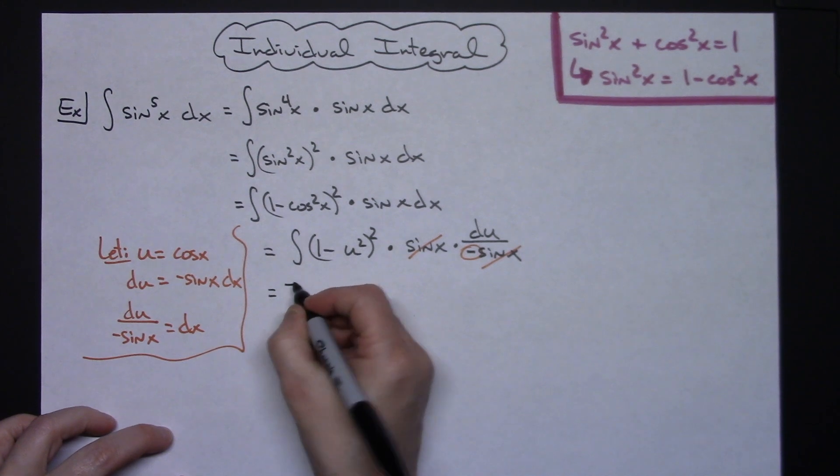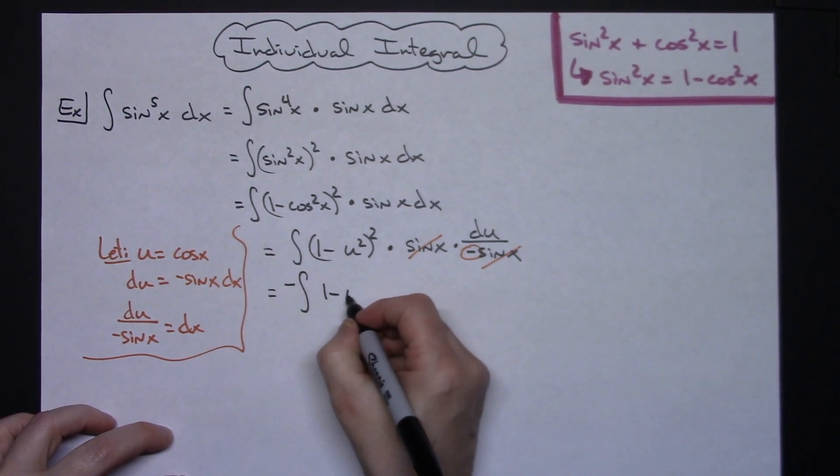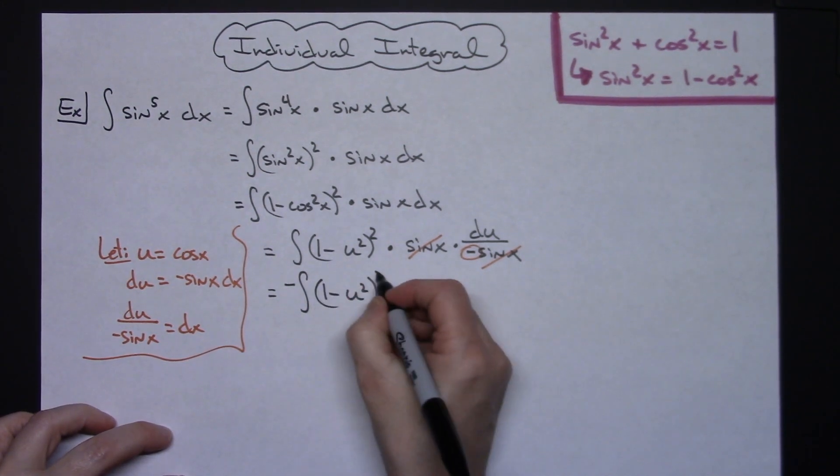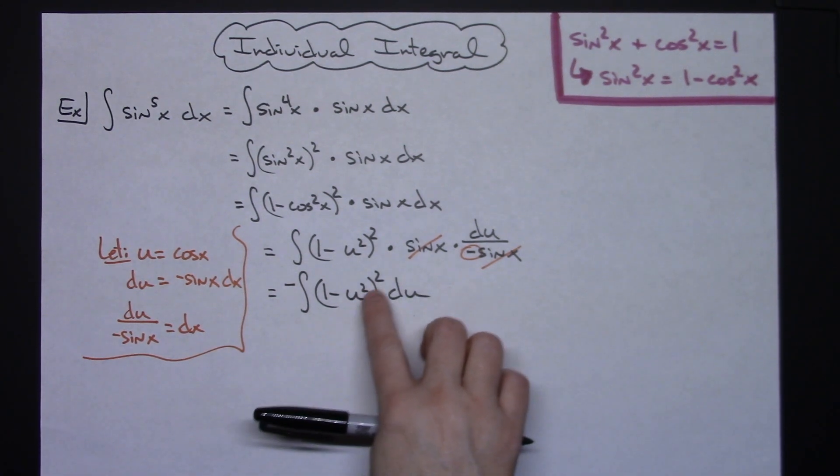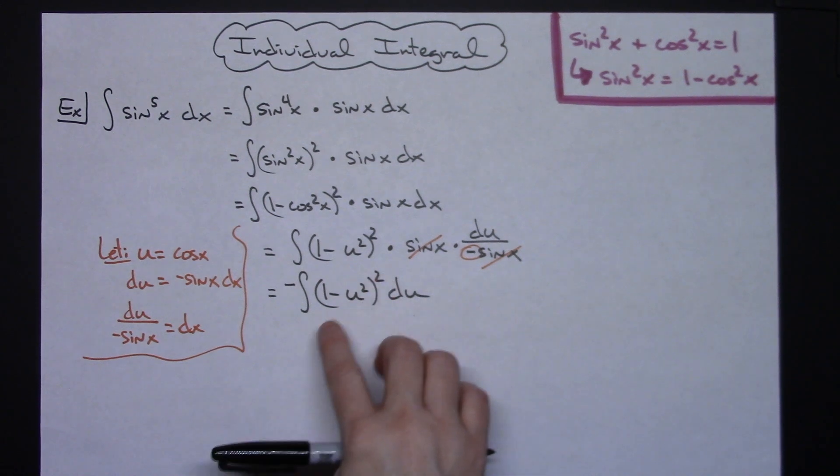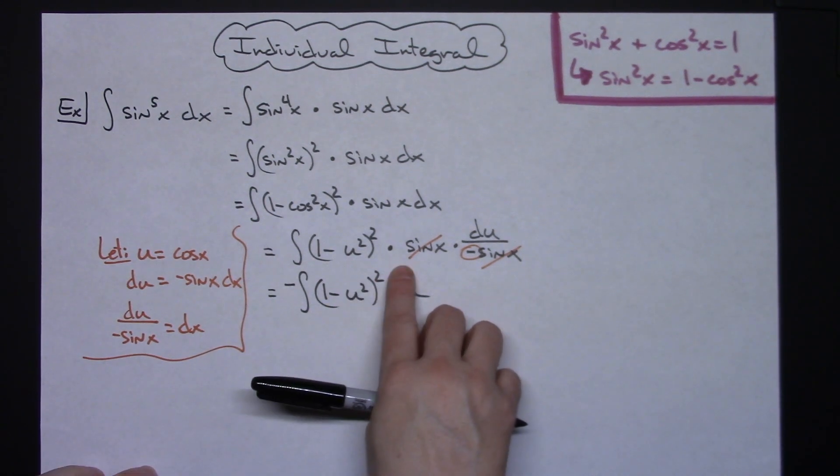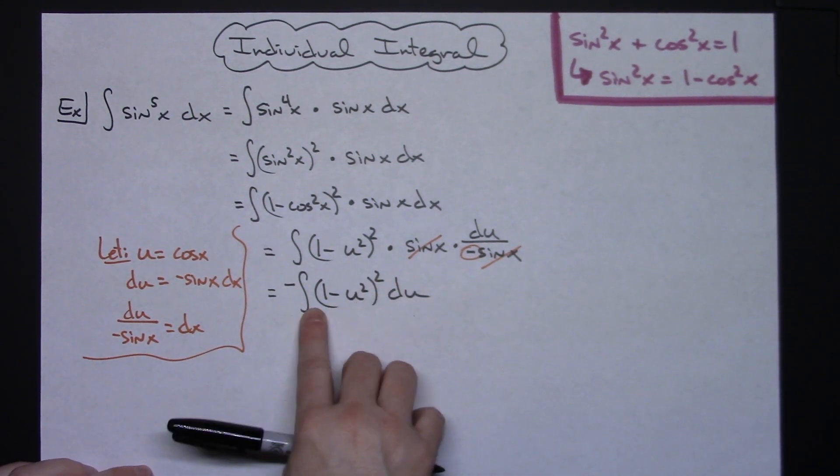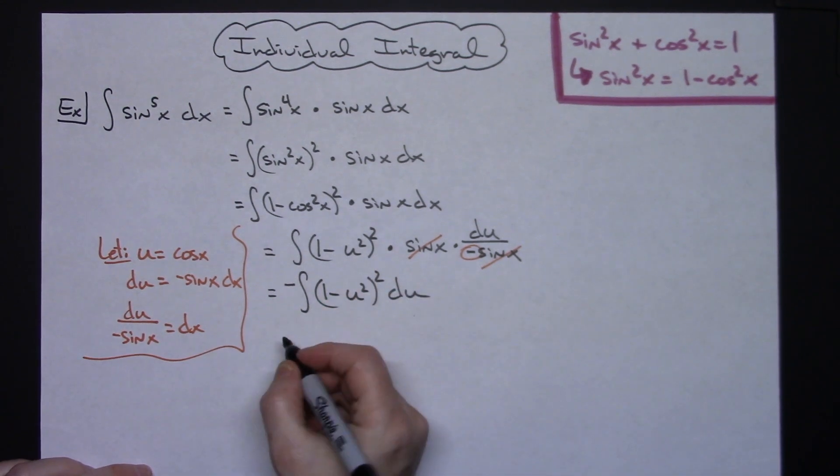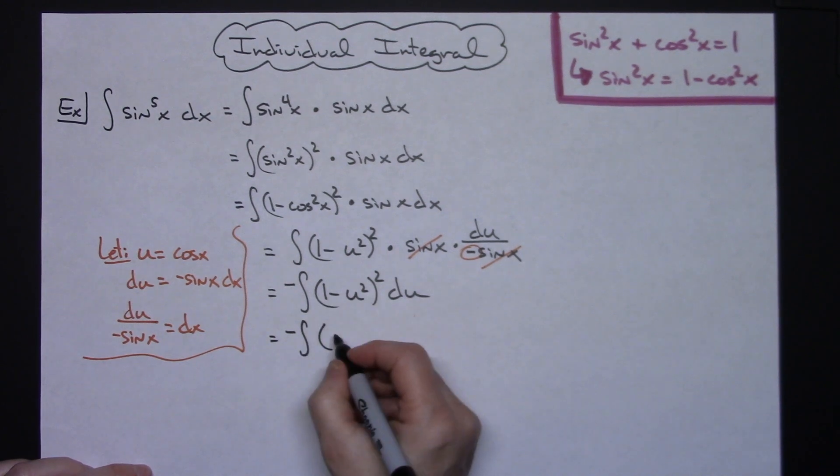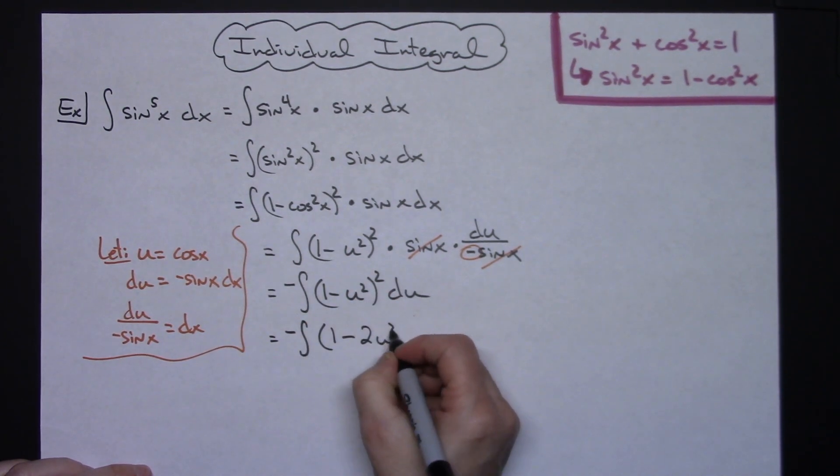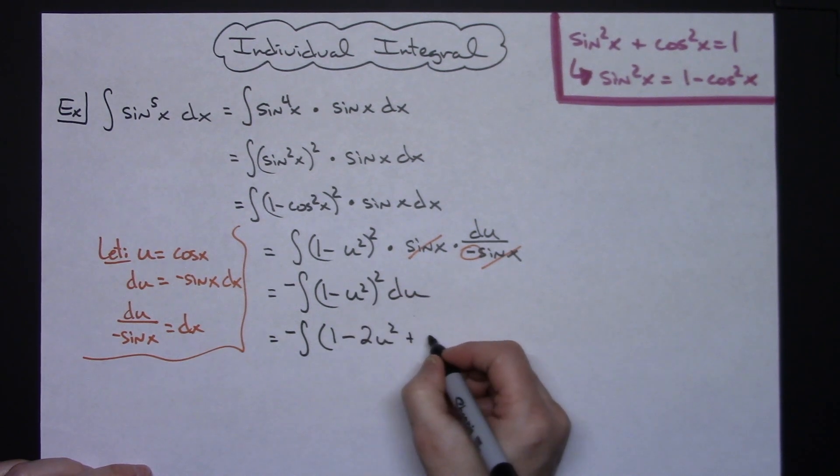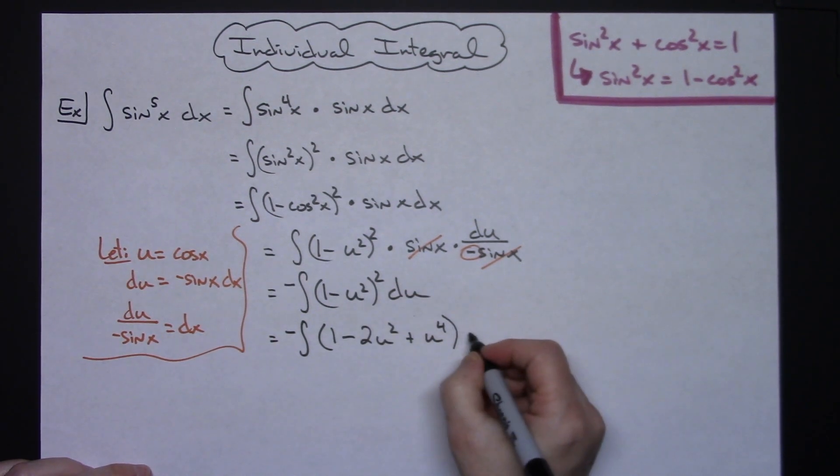So then I'm going to have negative the integral of one minus u squared quantity squared du. Now at this point this is just a straight polynomial. I've got a binomial here being squared so the easiest way to work this out is just to foil that out. So we'll have negative integral. Foiling that out we'll have 1 minus 2 u squared, squaring the last one we'll have plus u to the fourth, then du.